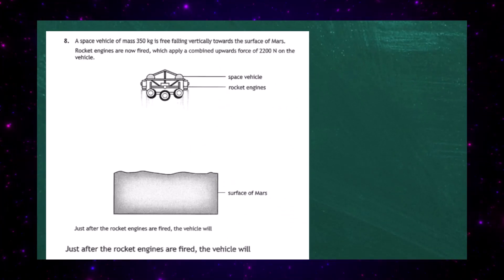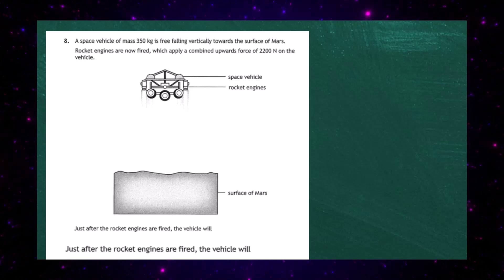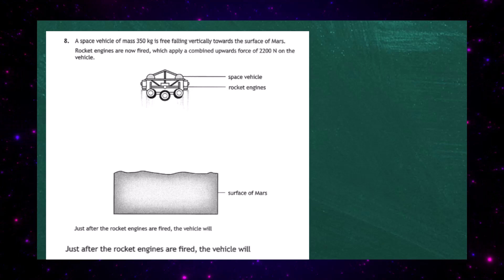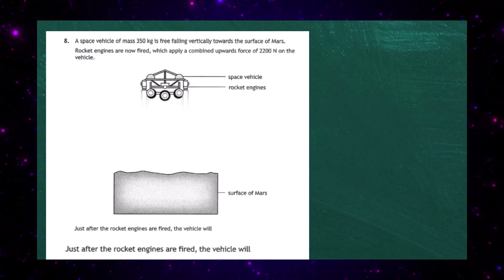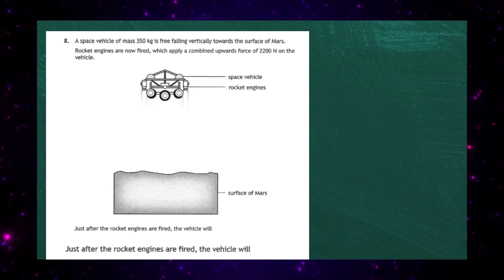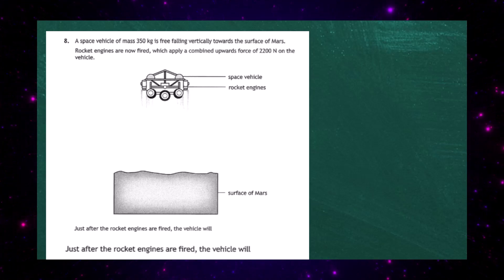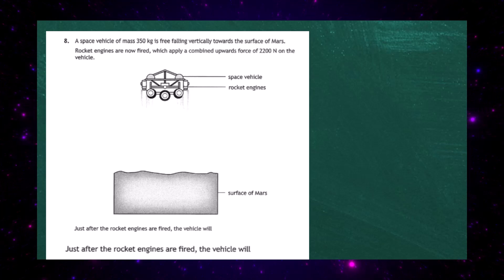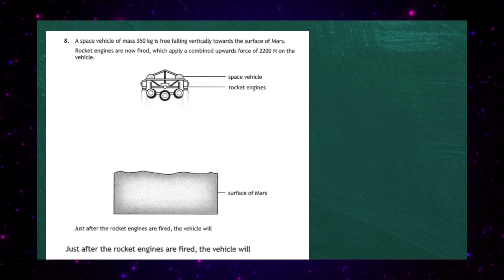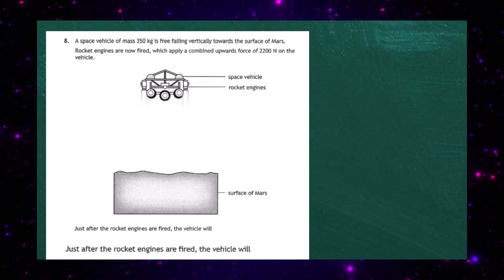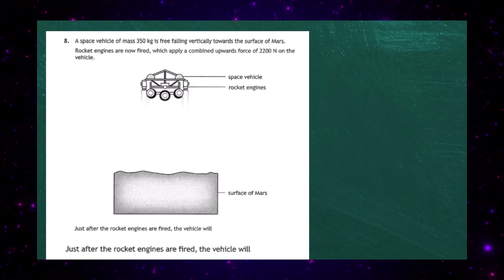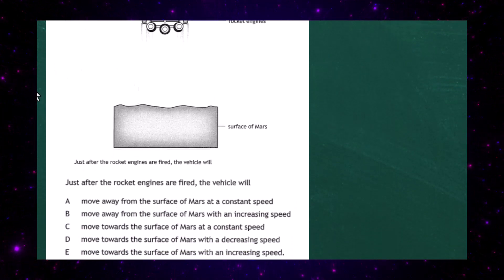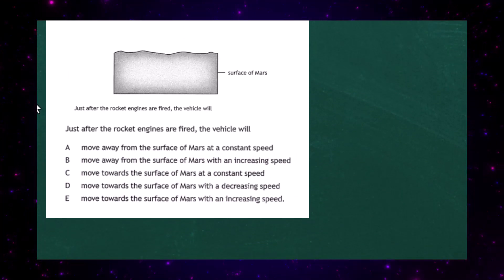Question 8 from the 2023 National 5 Physics examination. A space vehicle of mass 350 kilograms is free-falling vertically towards the surface of Mars. Rocket engines are now fired, applying a combined upward force of 2200 Newtons on the vehicle. Just after the rocket engines are fired, the vehicle will...